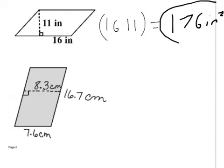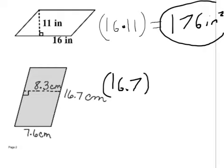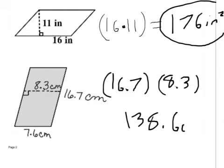All right, now we have the second one. It gives us three measurements. Which two do I use? The height and the base. But what would be my base? Someone raise your hand. McKenzie. Okay, my base is 16.7. What would be my height? 8.3 or 7.6? It's 8.3 because, like I said on the slide before, it has to be touching the right angle. 7.6 is not touching the right angle. So 16.7 times 8.3, you get 138.6 centimeters squared.